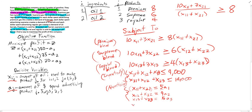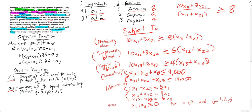Of course, we need X_IJ and A_J to be greater than or equal to 0, for I equal to 1 and 2, and J equal to 1, 2, and 3. That is our non-negativity constraint. Thank you for watching.